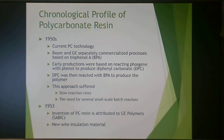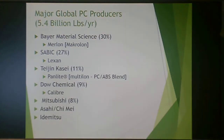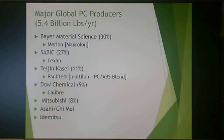In 1953, polycarbonate resin was attributed to GE Polymers, now under SABIC, producing a new wire insulation material. The major global polycarbonate producers output 5.4 billion pounds per year. Bayer Material Science does about 30 percent and SABIC about 27 percent. Bayer produces Macrolon or Merlon, and SABIC produces Lexan. Other companies produce brands like Panlight or Calibre, but primarily it's Bayer and SABIC.